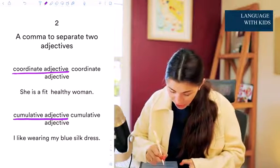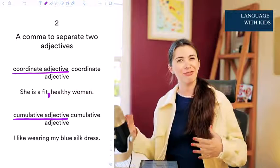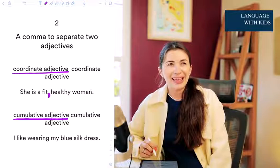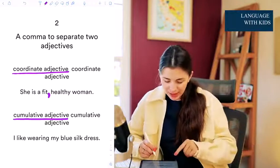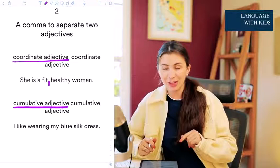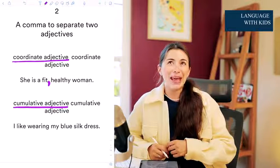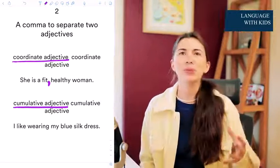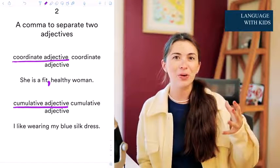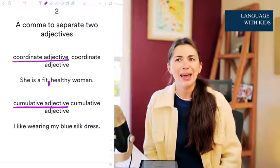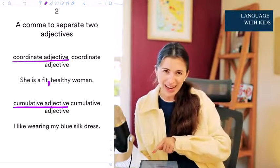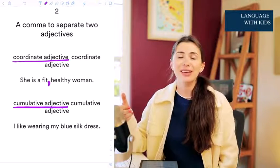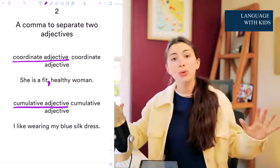So 'she's a fit, healthy woman' — because we can say 'she's a fit and healthy woman' or 'she's a healthy, fit woman.' Now for cumulative adjectives, they describe different things. For example: 'I like wearing my blue silk dress.' If you say 'blue and silk dress,' these sound like two different categories. Blue and silk are two different categories describing the dress, and normally color comes first, so you can't really change the order or place 'and' in between. So there is no need for a comma here.